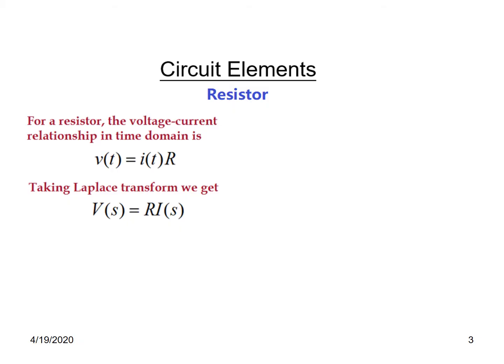First the resistor. We know that V(t) equals I(t) times R and similarly in the Laplace domain it will be V(s) equals R times I(s). That means the resistance does not change whether it is in time domain or Laplace domain. In the diagram the resistance remains same, but we will see in case of inductor and capacitor there are changes.